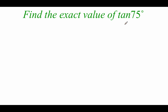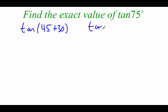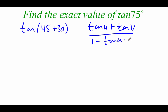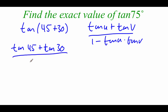In this first example, we've got the tangent of 75 degrees. A lot like we did in the last video, we're going to break that 75 down into 45 plus 30. Now this is a tangent sum, so we'll be looking at the formula that goes tangent of U plus the tangent of V all over 1 minus tangent of U times tangent of V. Plugging in our values, we've got the tangent of 45 plus the tangent of 30 all over 1 minus the tangent of 45 times the tangent of 30.